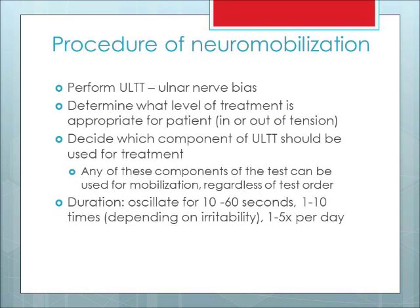The following is the procedure for ulnar nerve neuromobilization. Having performed the upper limb tension test with ulnar nerve bias, use the results to determine whether in tension or out of tension treatment is appropriate. Decide which component of the test to use for mobilization — any component can be used regardless of test order. Oscillate for 10 to 60 seconds, 1 to 10 times depending on the patient's irritability, approximately 1 to 5 times per day.